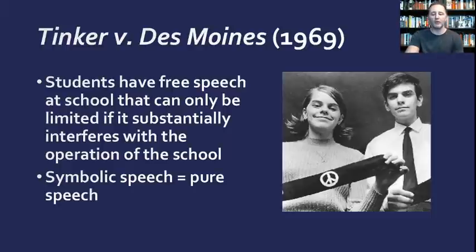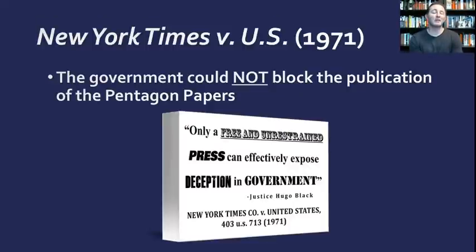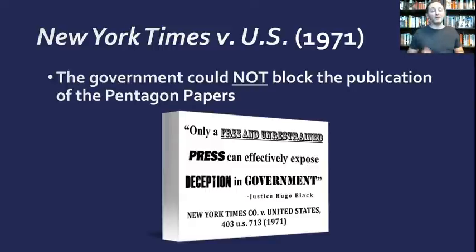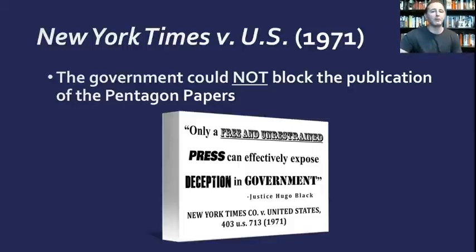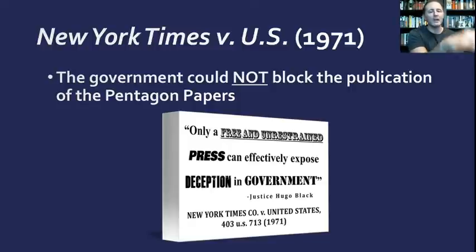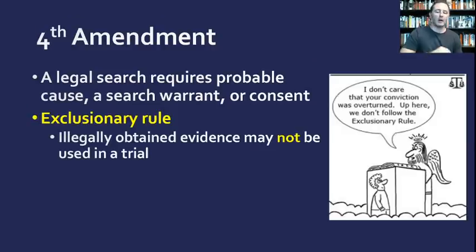New York Times v. United States came just two years after Tinker, in 1971, and similarly the Court was pro-freedom of the press. The government attempted to block publication of the Pentagon Papers. The Supreme Court ruled against prior restraint — the government cannot censor a newspaper before it publishes. I highly encourage you to watch the required Supreme Court cases video before tomorrow's live review so you can come with questions. This case limits government power and expands civil liberties — the Court ruled against government censorship.